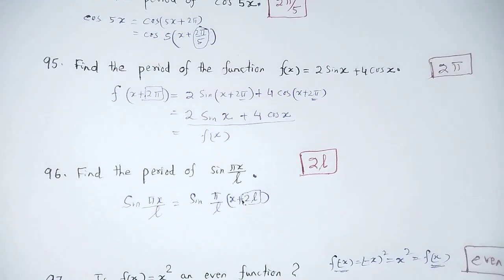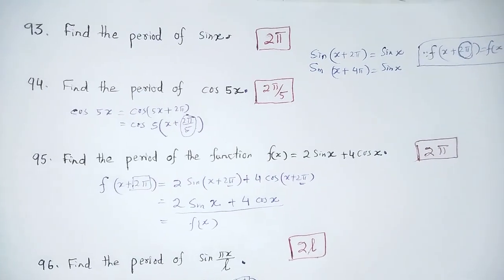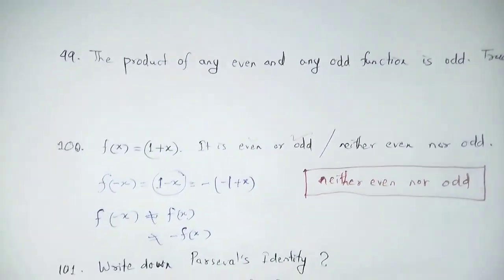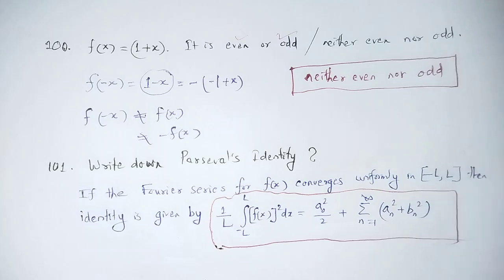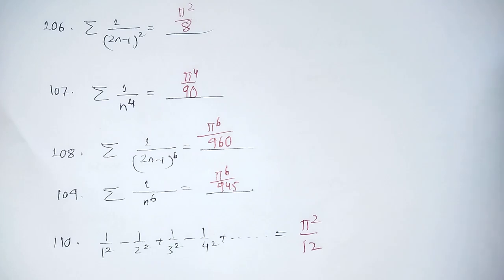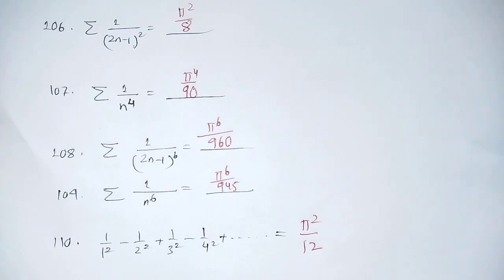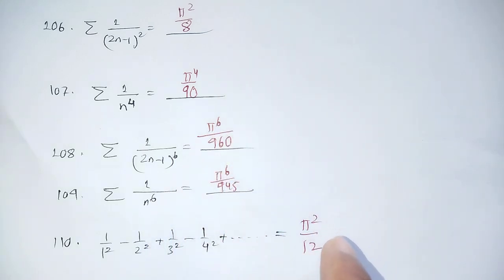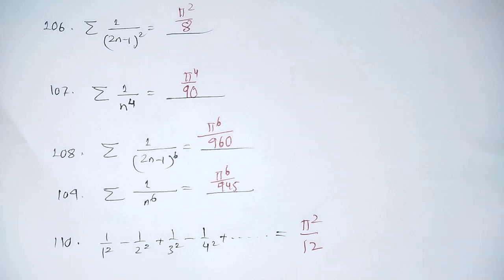This is mathematical physics — Fourier series expansion, Fourier coefficients, and theoretical questions. This covers question numbers 93 up to 101 on period, even/odd functions, Parseval's identity, and question 102 on Dirichlet's conditions. Let me wind up the session. Thank you.